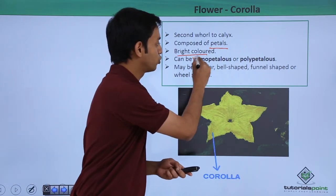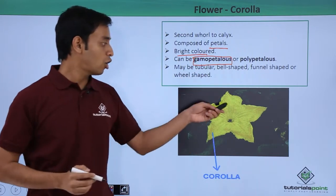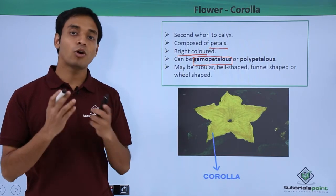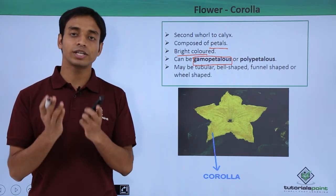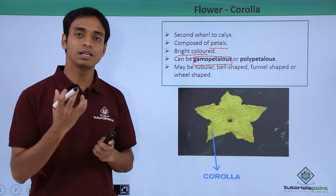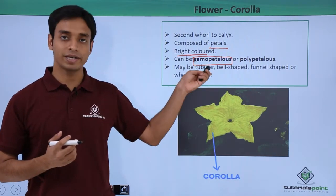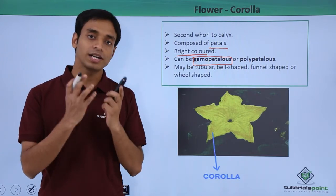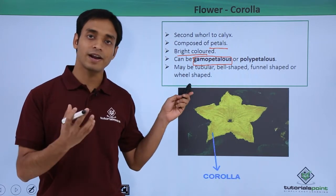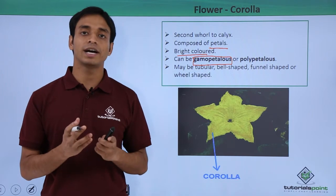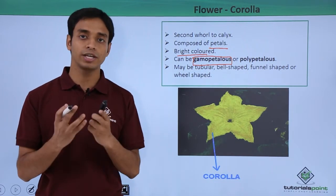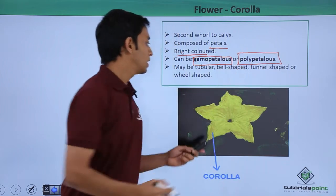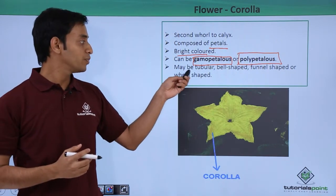Petals can be of two types. When all the petals — for example, if there are five petals in a flower — are fused or united together and look like a single petal, they are known as gamopetalous. On the other hand, if all the petals are not united and are free from each other, then they are known as polypetalous flowers.